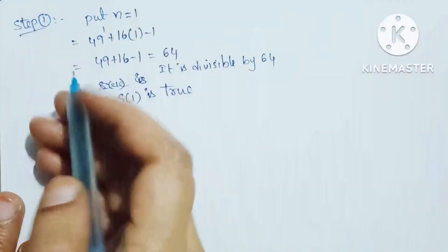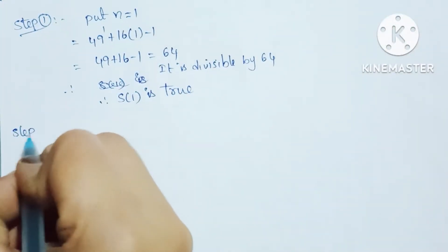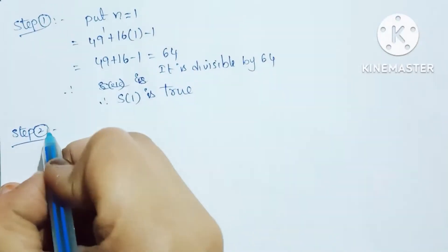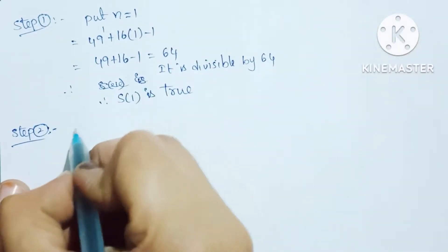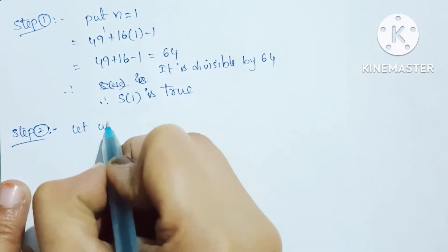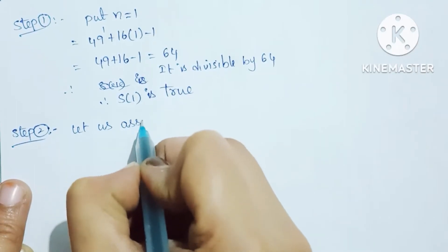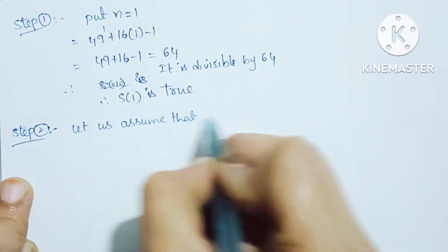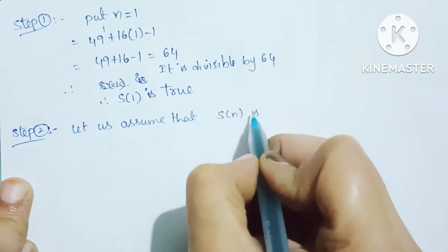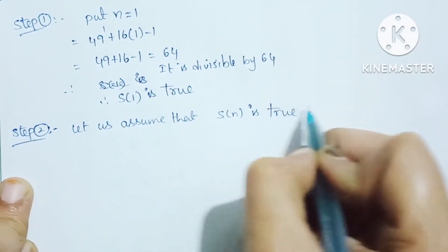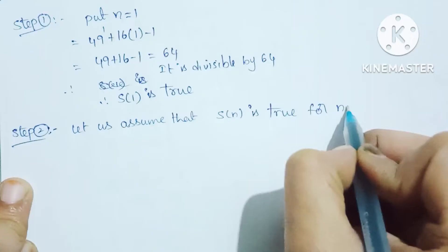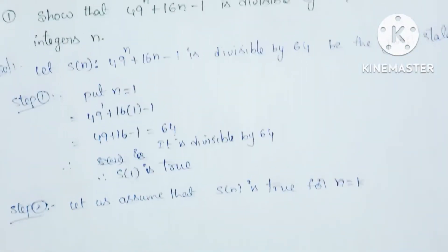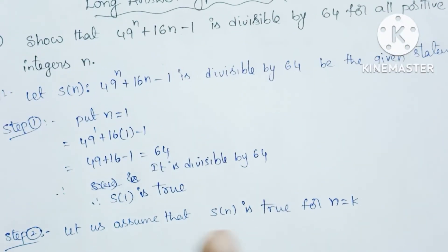Next, Step 2. Let us assume that S of n is true for n equal to k. We assume S(k) is true.